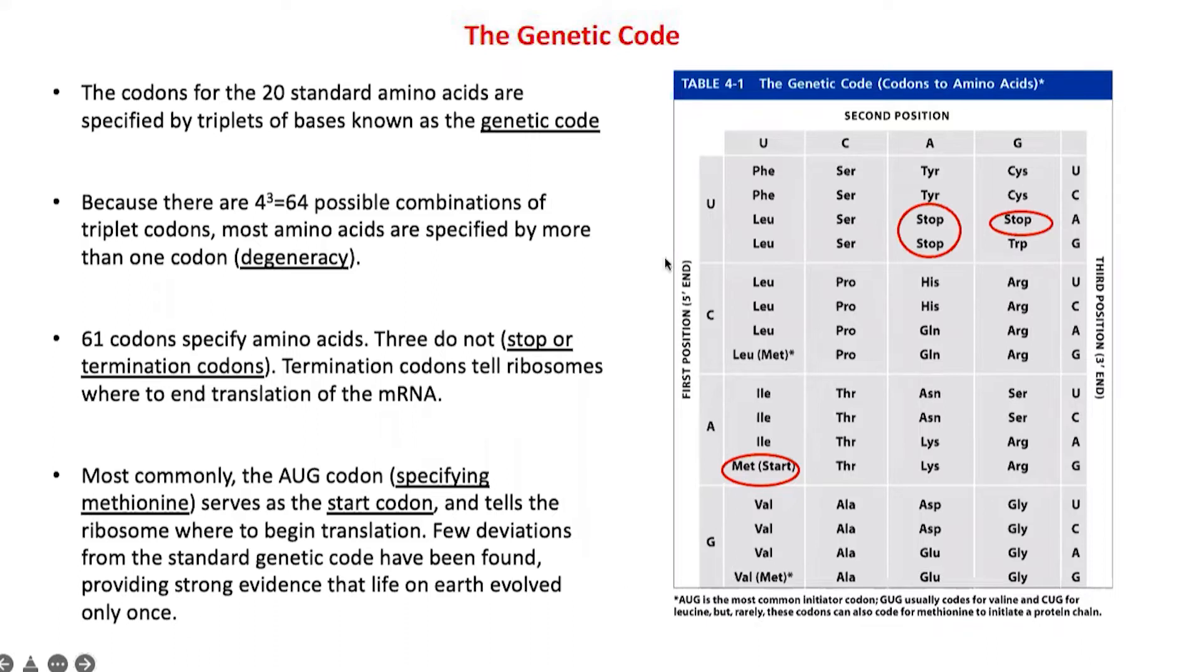There is strong evidence that life on earth evolved only once using this genetic code. We don't have multiple species with different genetic codes. If you take a gene from bacteria and express it in humans, the human ribosome will recognize the bacterial DNA because the genetic code is the same.